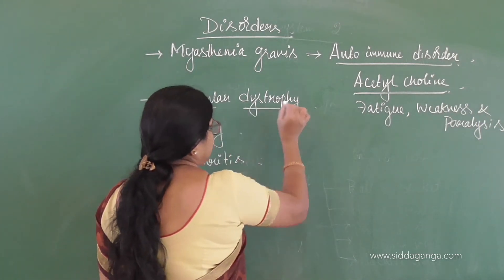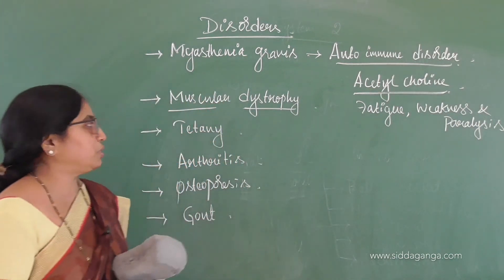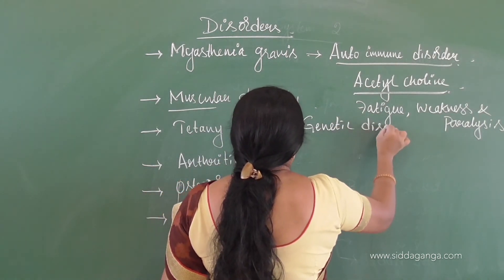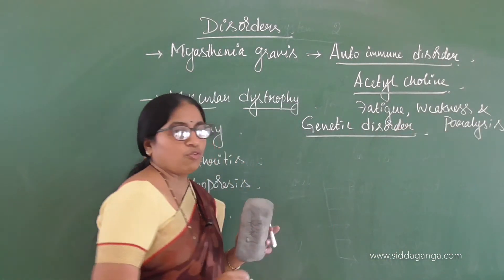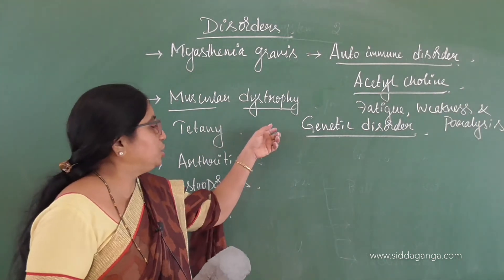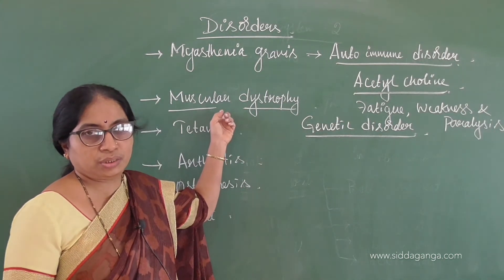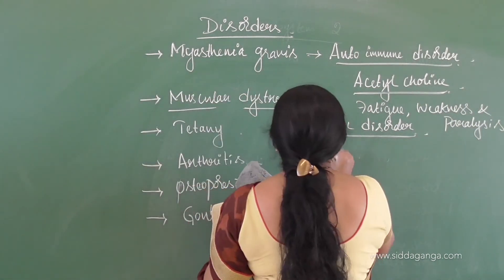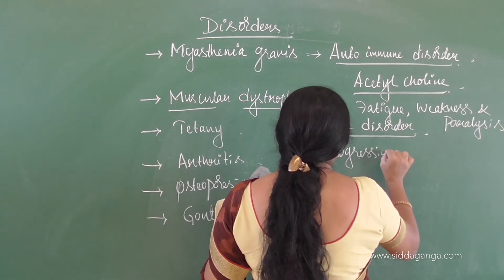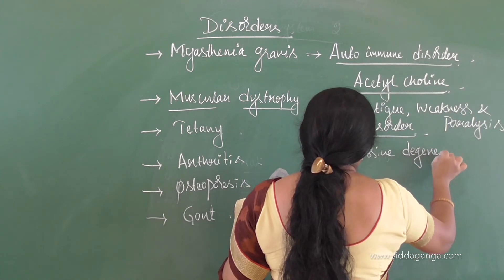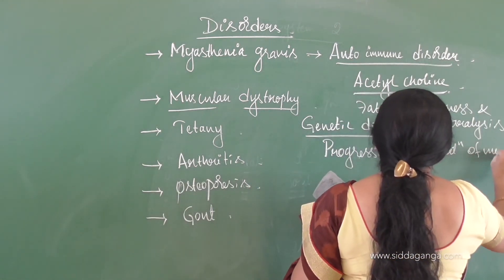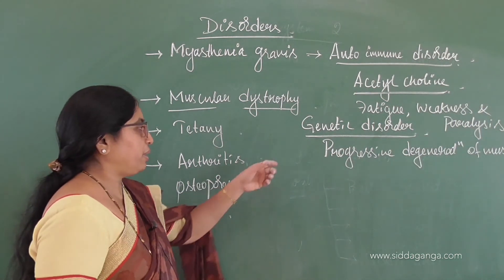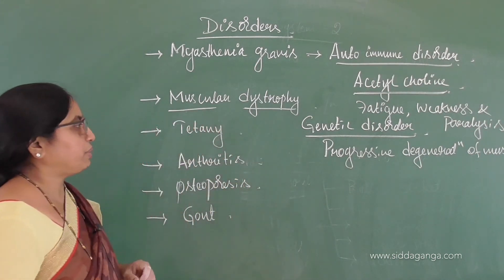Muscular dystrophy is a genetic disorder caused by faulty or abnormal genes that may have come from the forefathers. The characteristic of muscular dystrophy is progressive degeneration of muscles — day by day the muscles degenerate and become functionless, making parts of the body immovable.